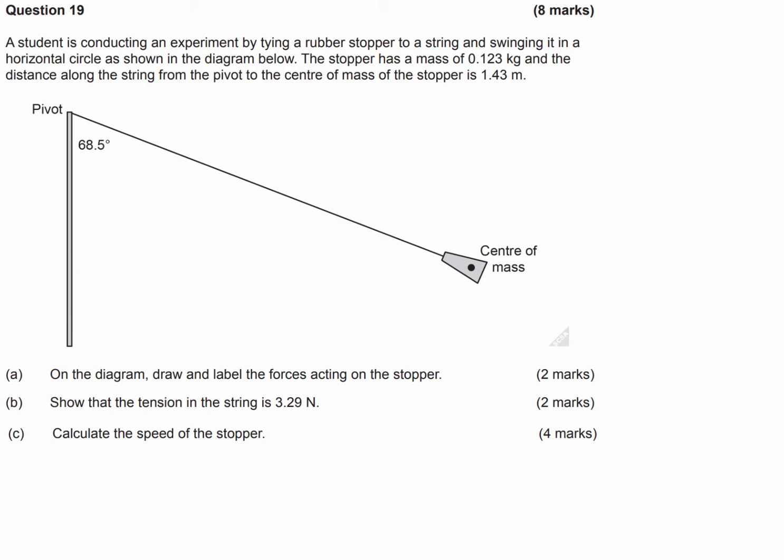The way I like to do part A is to figure out what's going to happen to that centre of mass if the string breaks. That cork is going to fall down because of gravity and fall outwards due to centripetal acceleration. So what is keeping the rubber stopper there is the tension in the string, and we've also got the force of gravity acting on it. The first force is the tension in the string between the pivot and the centre of mass, and the second force is gravity.